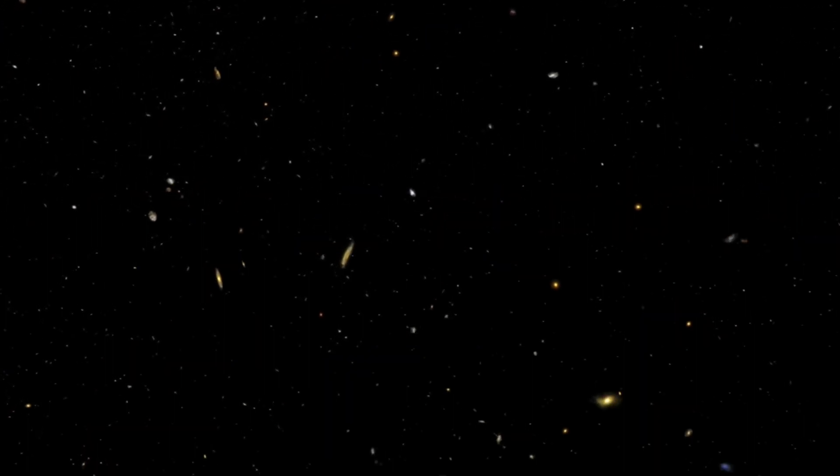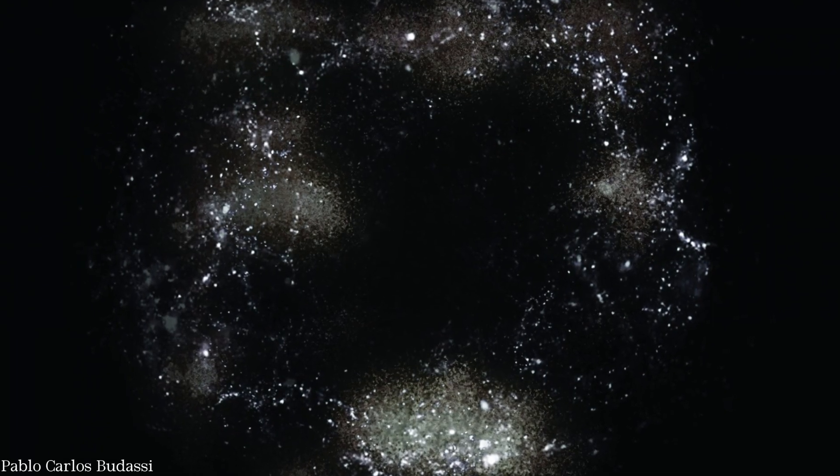In general, neighboring galaxies are relatively close to each other, with voids of not very large spaces in between. But there's one unique case known as the Boötes Void.